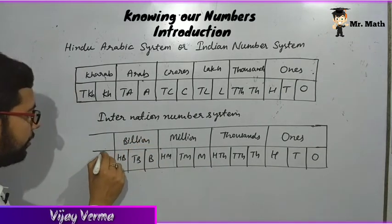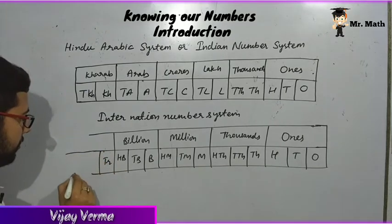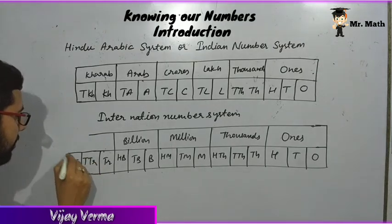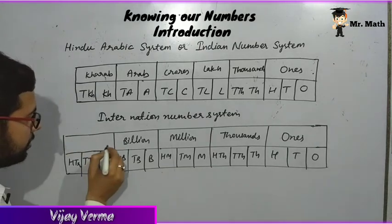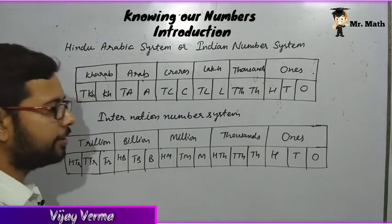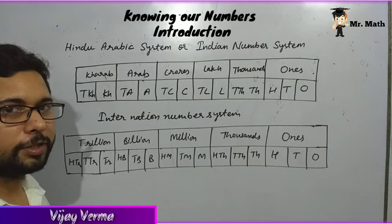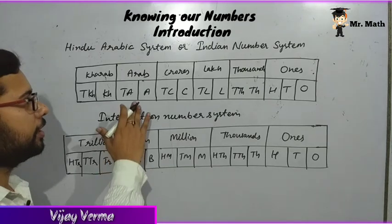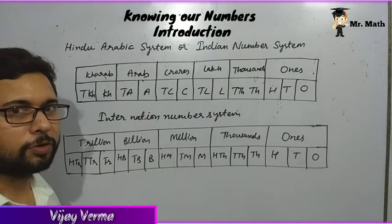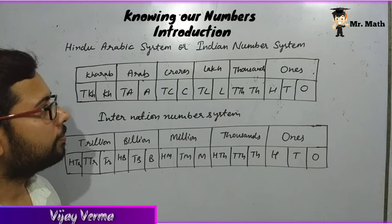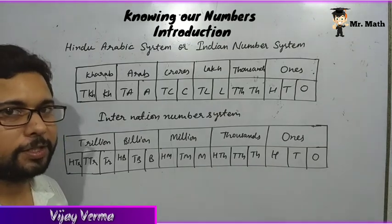After billion comes trillion, then 10 trillion and 100 trillion. For this class level, we only need to remember up to trillion.